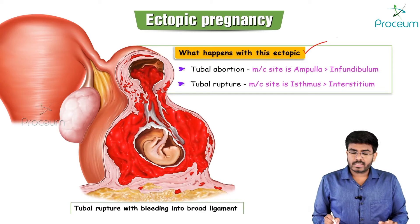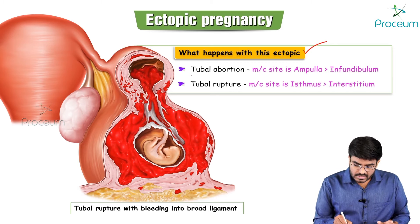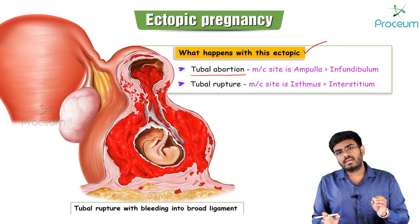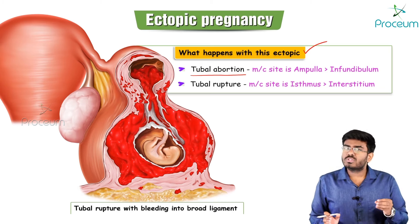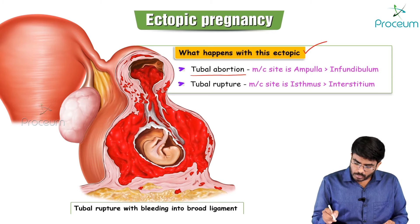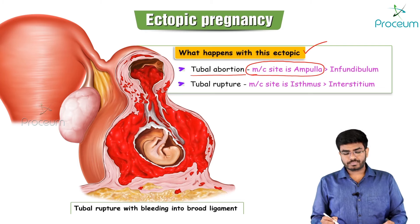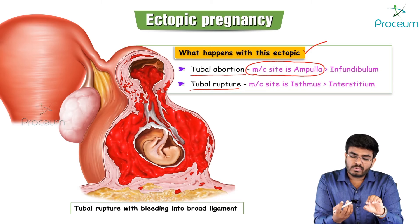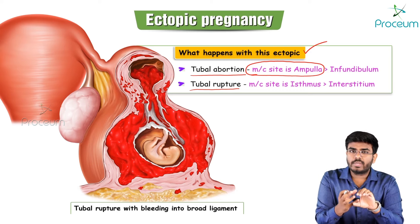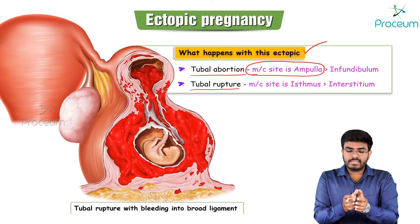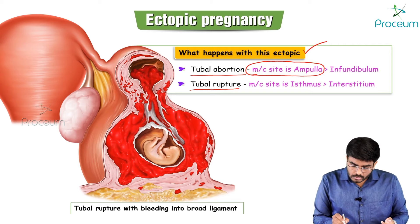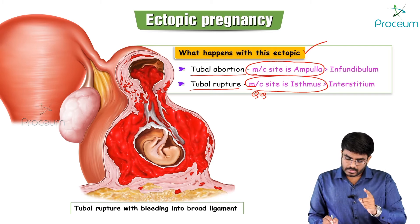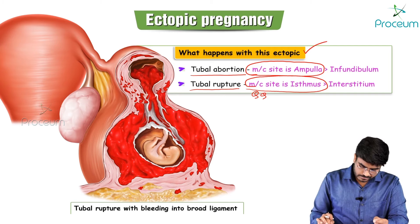If an ectopic occurs, there are two possible fates. First, tubal abortion — the ectopic simply aborts because the fallopian tube cannot support embryo growth; tubal abortion most commonly occurs in the ampullary region. Second, tubal rupture — the growing ectopic stretches and eventually ruptures the fallopian tube, causing severe bleeding. The most common site of tubal rupture is the isthmus.